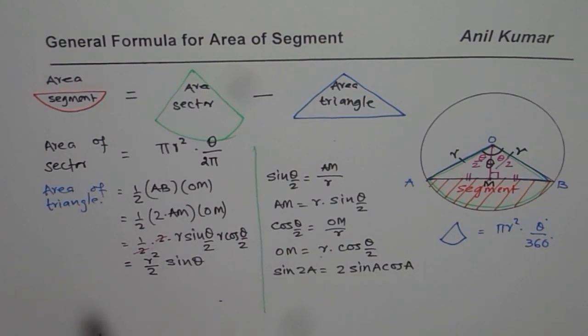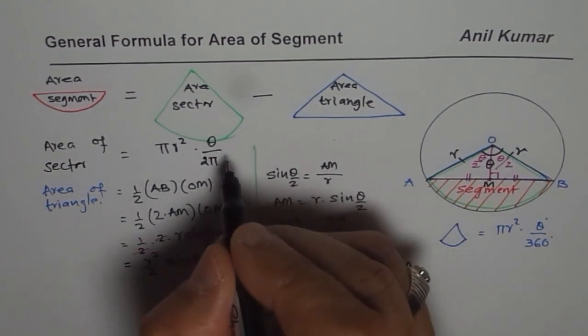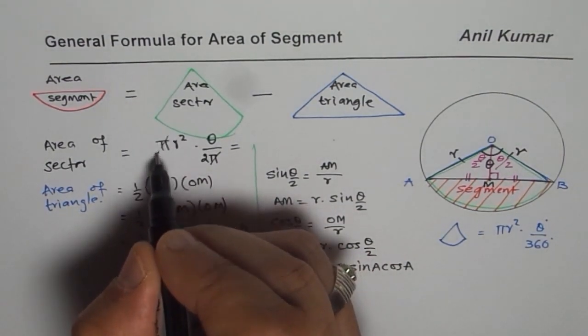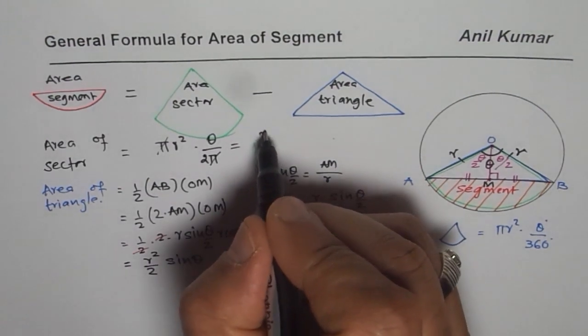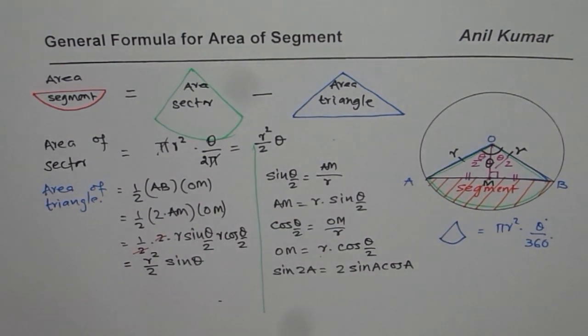Now we know area of the triangle also, which is r square by 2 sine theta in this particular case. Area of the sector, let me simplify this one also. 2 pi. Pi and pi cancels out. So we get r square by 2 theta.